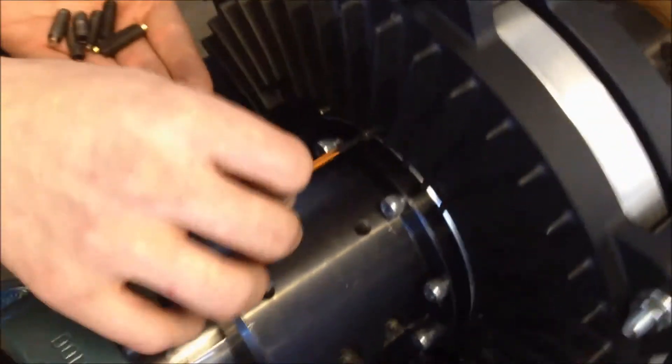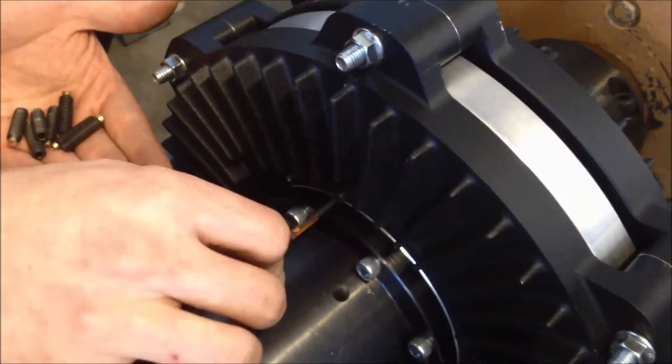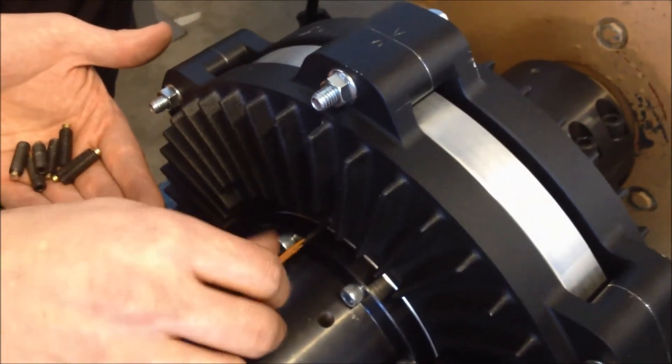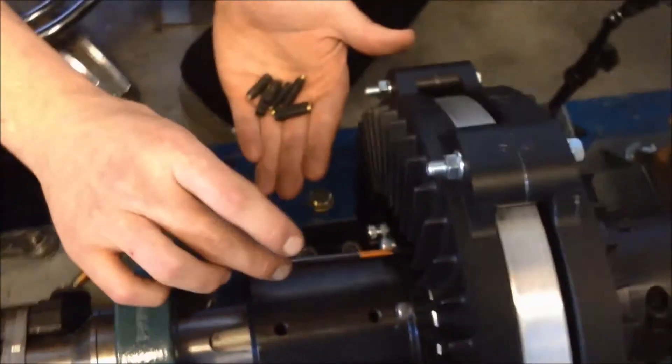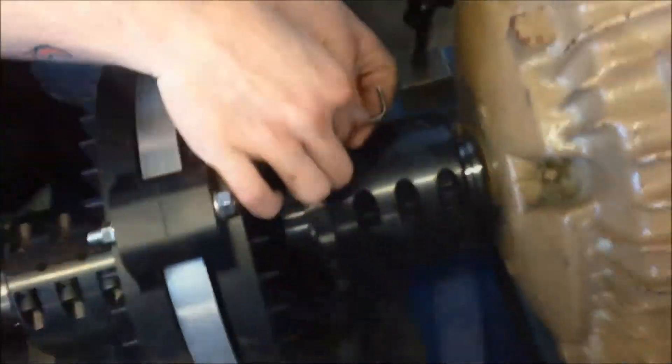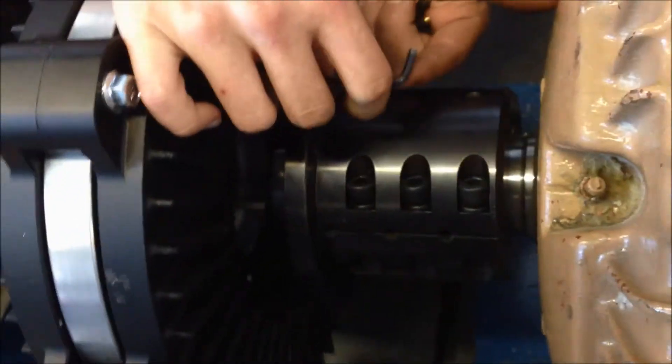Insert the four supplied jacking bolts into the threaded holes on the induction rotor face. Screw them in until they just come into contact with the magnet rotor. Follow the same procedure on the other side.